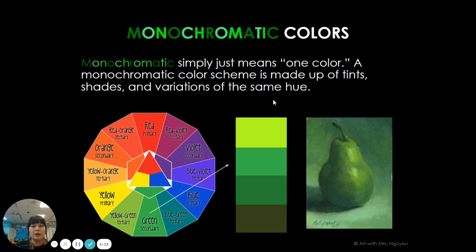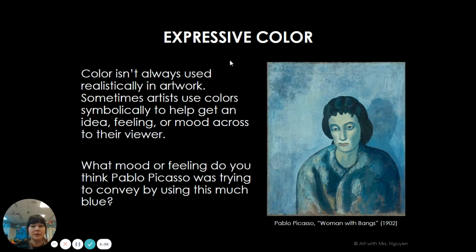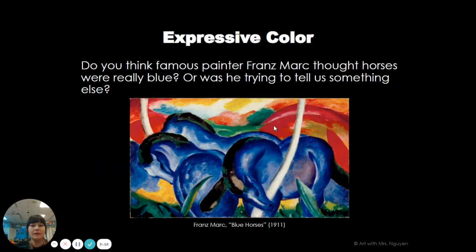Monochromatic means one color. So if you look at the color green, even though green is just one color, there are many different darknesses and brightnesses of green. This is an example of a monochromatic painting where it's all green, but using different types of green. Expressive colors is when artists use colors that are not realistic — a person is not actually blue, but Picasso painted this painting with blue to show the emotion of the artwork. Another example is Franz Marc, who colored his horses with blue.